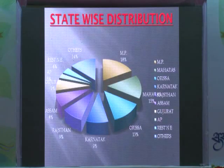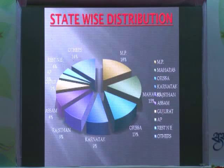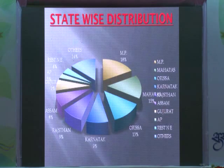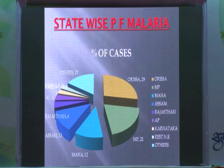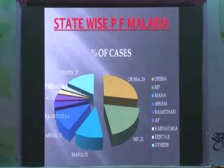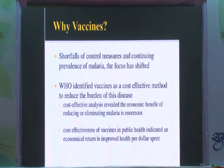State-wise distribution: commonest in MP 18%, Maharashtra 15%, Odisha 13%, Karnataka 9%, Rajasthan 9%, Assam 8%, Gujarat 7%. The deadly malaria, Plasmodium falciparum, is commonest in Odisha 29%, then MP 21%, Maharashtra 13%, Assam 13%.